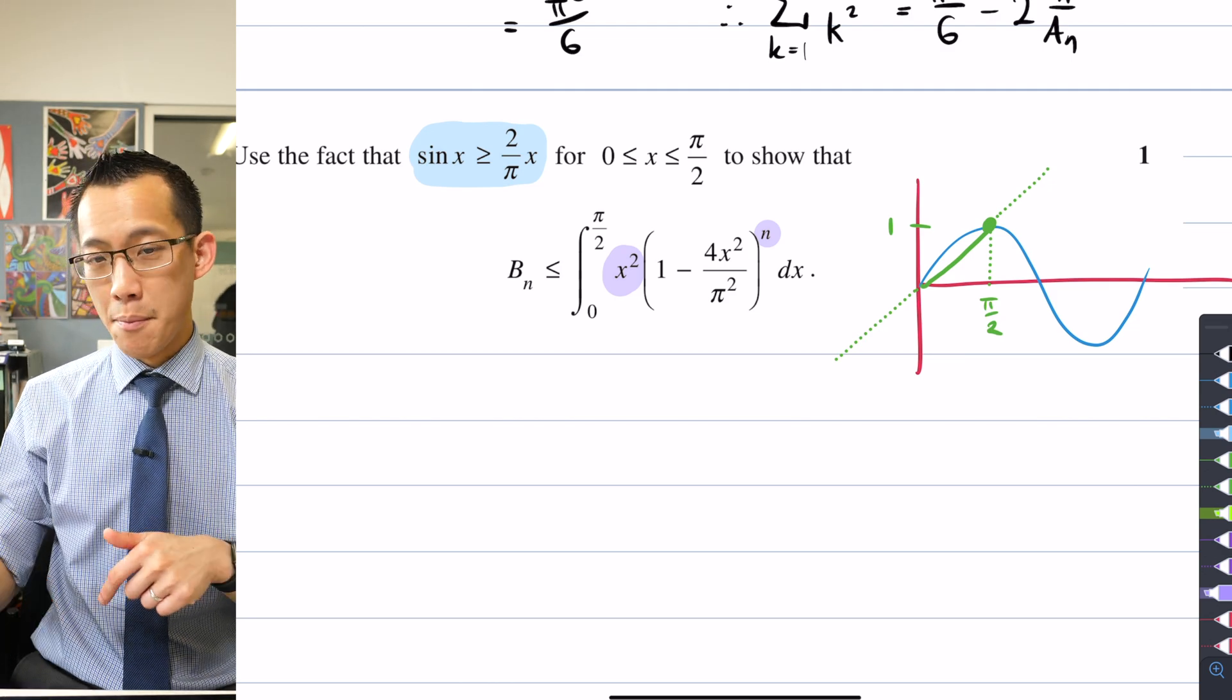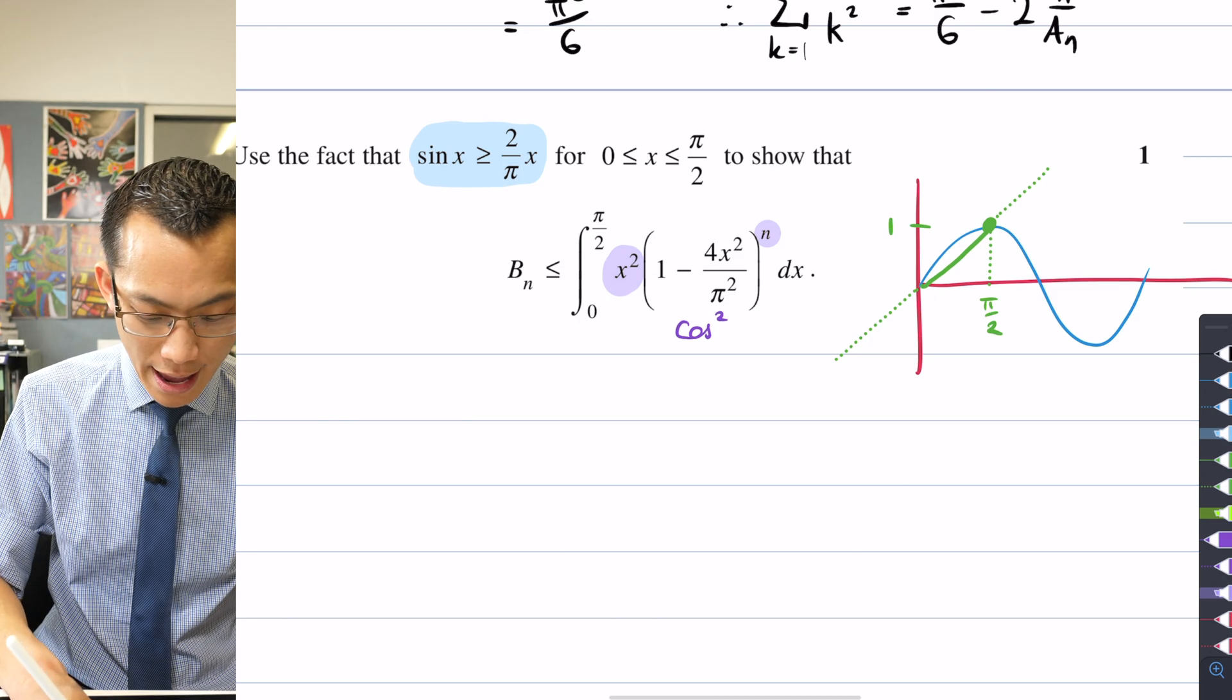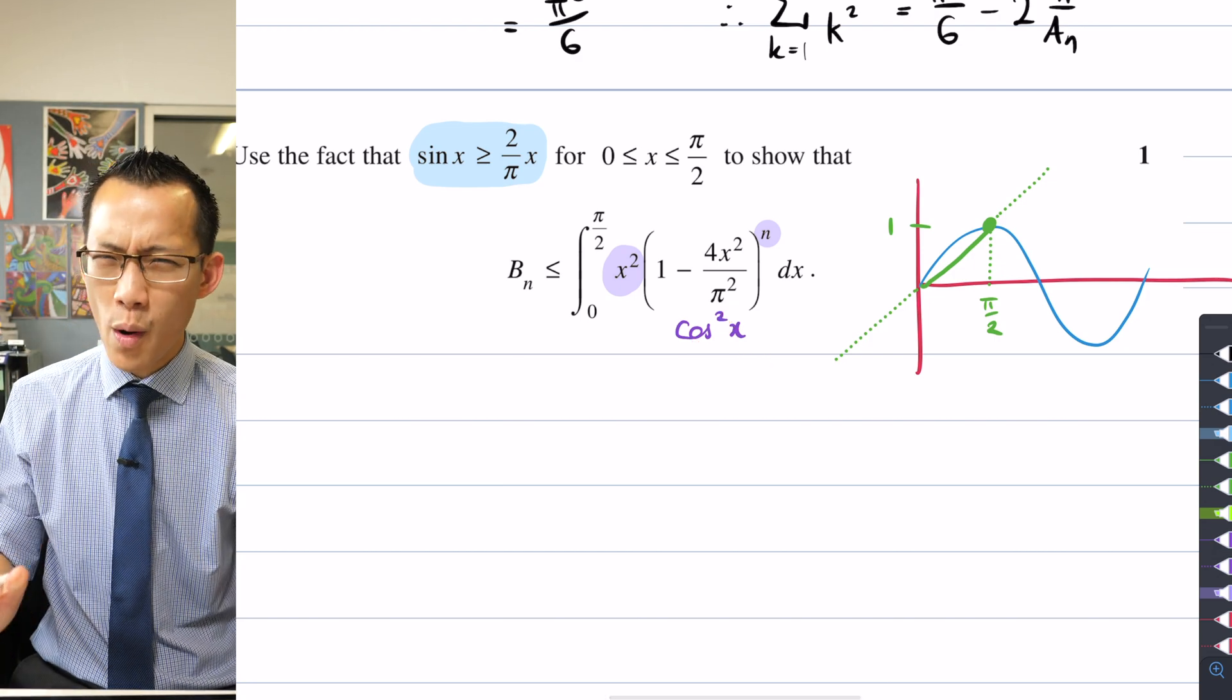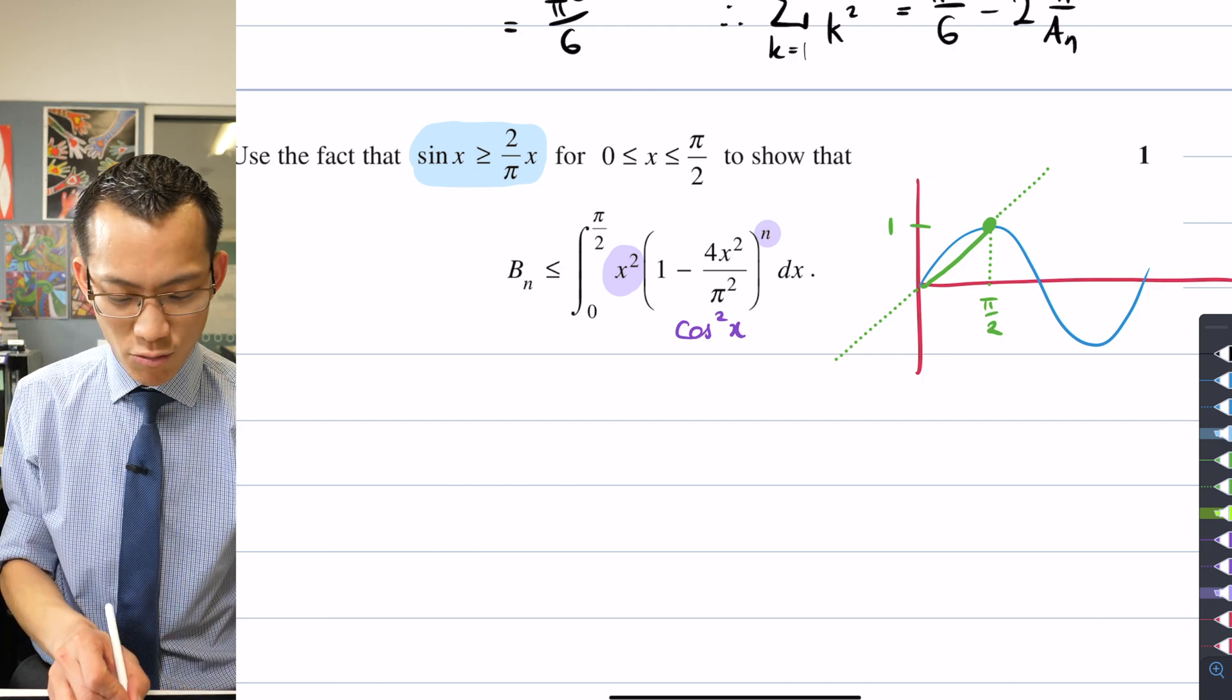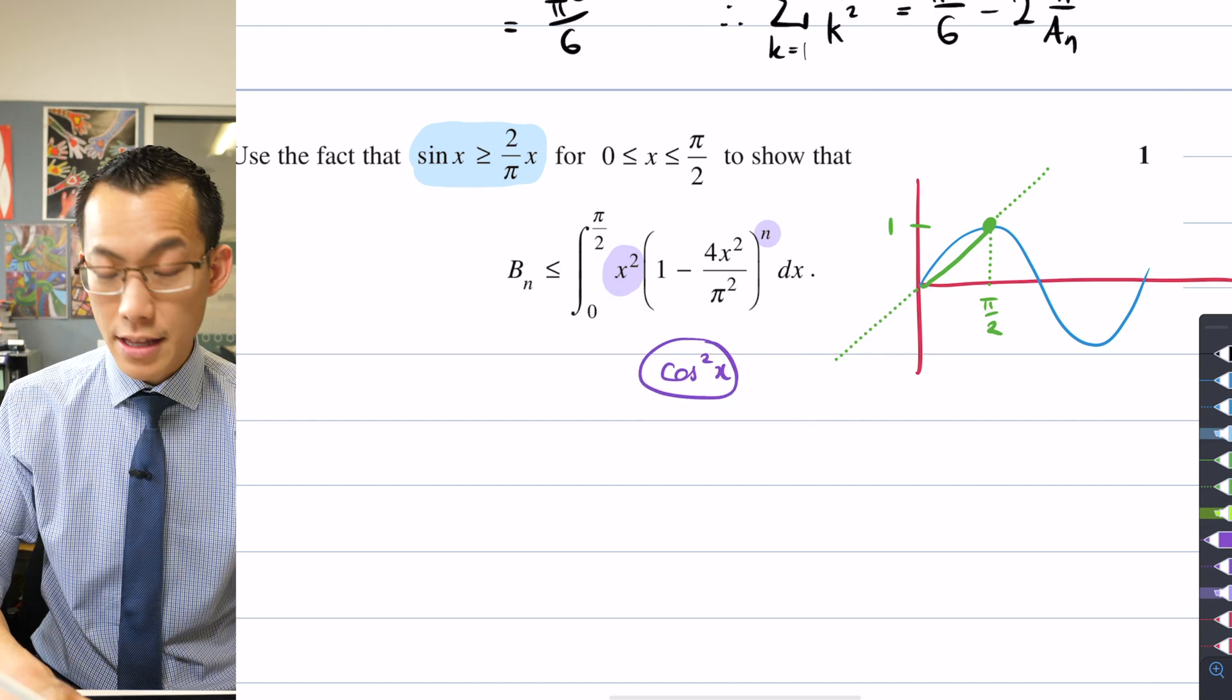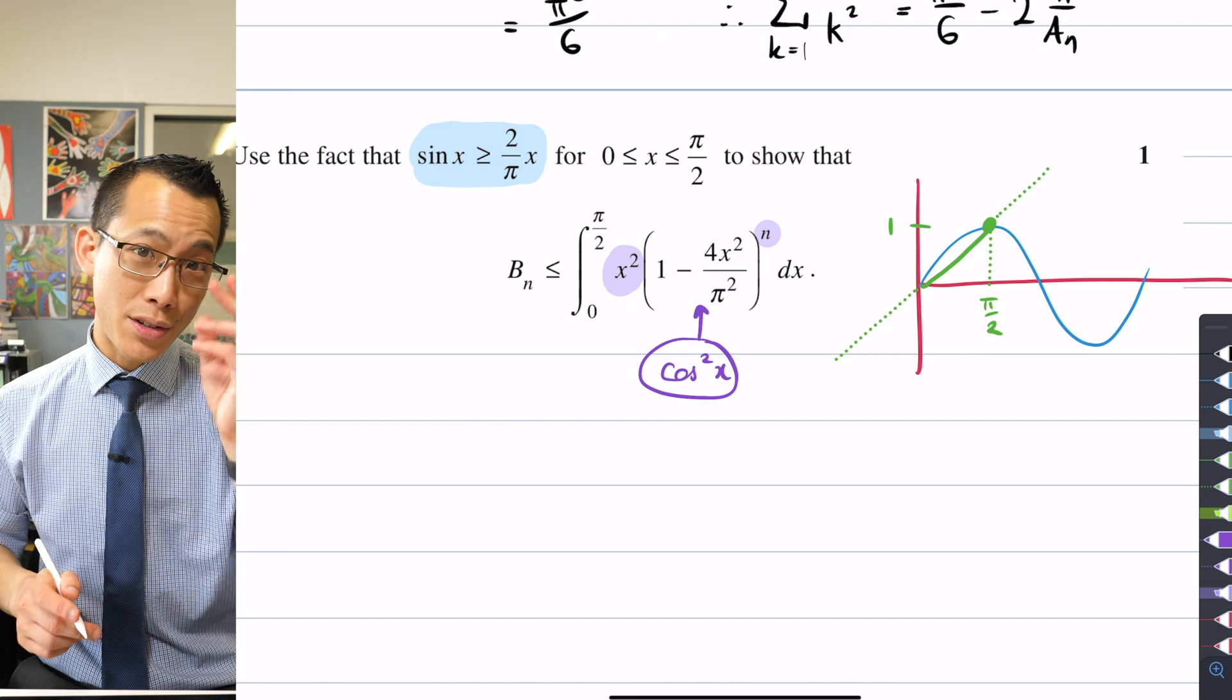And then you also have this power of n. So what's usually there for B_n is you would normally expect that there's a cos squared x in there, right? Because when you raise that to the power of n, that'll give you the cos to the 2n x that we've been working with for so long throughout this question. But instead, we don't see that, we see this. So clearly, whatever has been replaced by it, like this thing, this thing here, the cos squared, is equal, whereas this thing here must be less than or equal to. So that's what we're going to try and show.